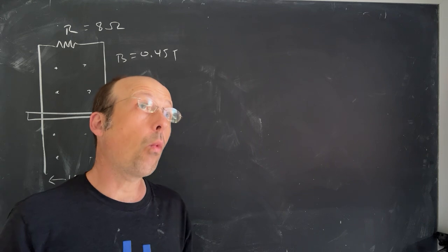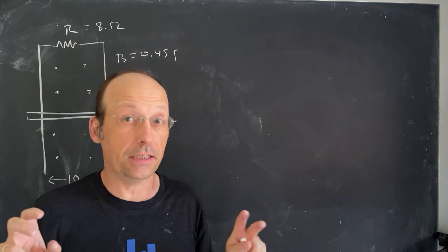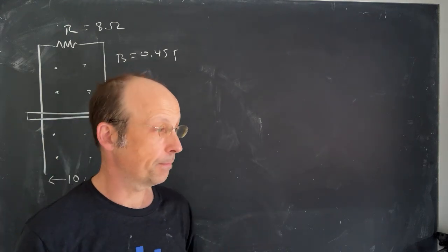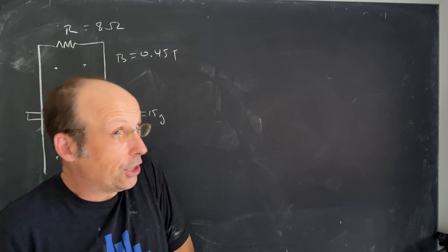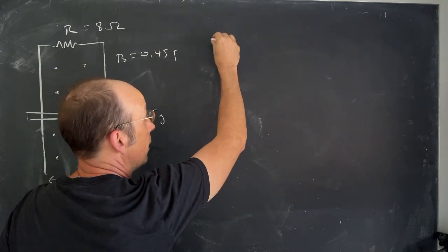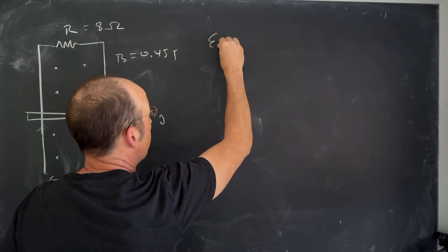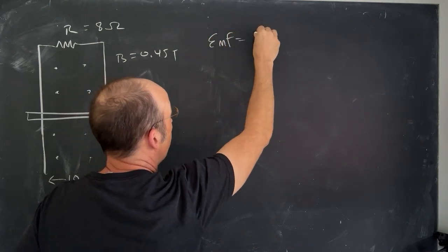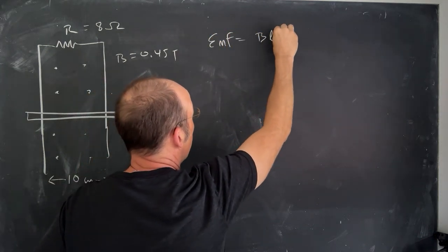The question is, what's the terminal velocity of the falling rod? Okay, so we can actually do this two ways, right? The first is to say, if I have an object moving in a magnetic field, then it produces an EMF of BLV.